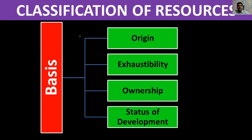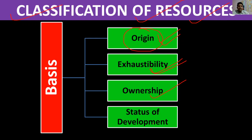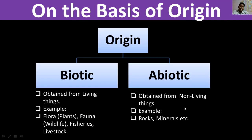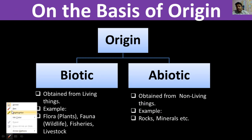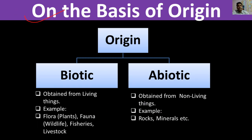Hello students, today we are going to discuss the classification of resources. We will classify them on the basis of different criteria: first is origin, second is exhaustibility, third is ownership, and fourth is the status of development.